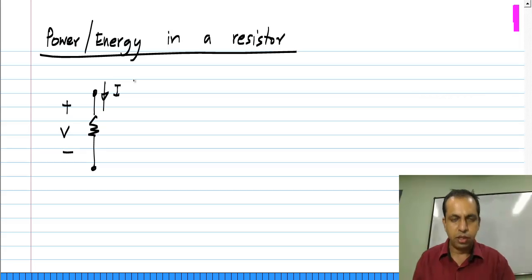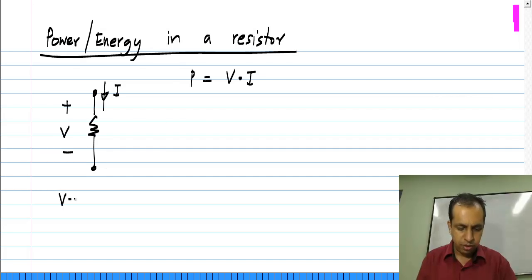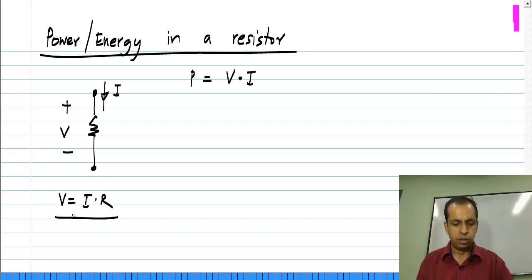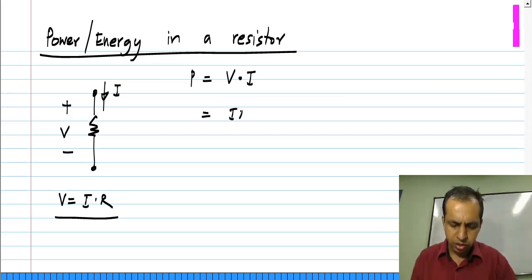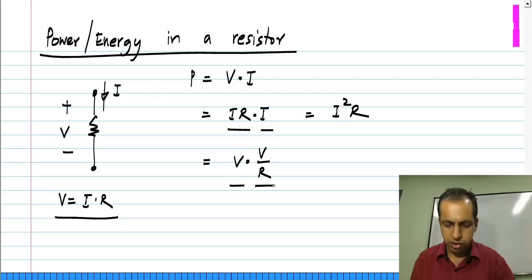As usual, take voltage and current with the passive sign convention. For any two terminal element, P is V times I, and each of these can be time dependent. Now for a resistor, the voltage is current times the resistance. So this relationship for the resistor can be written as I·R times I, which is I squared R. Alternatively, it can be written as V times V/R, which is V squared divided by R.